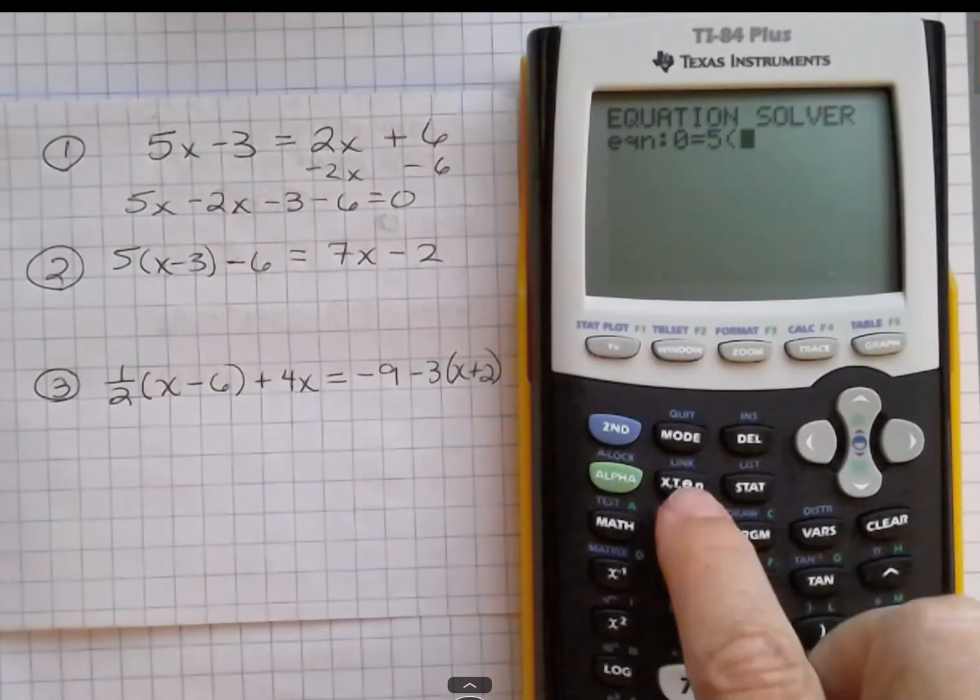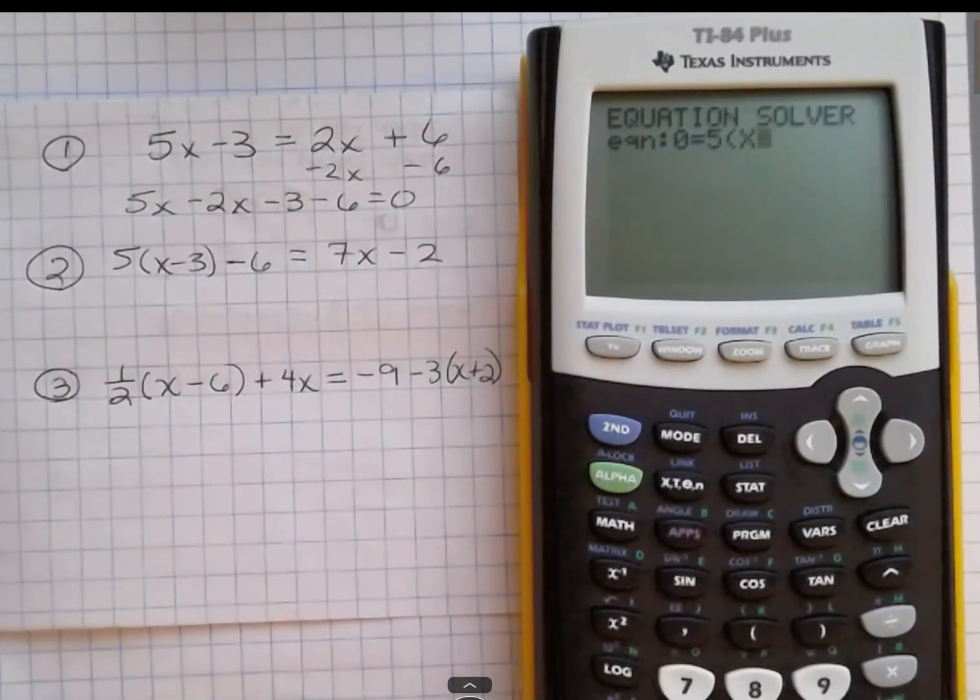And now I'm going to enter one that has parentheses, 5, parentheses. I'm going to use this button for x again. Minus 3 in my parentheses. Minus 6. And remember, I can't have anything on the right side.